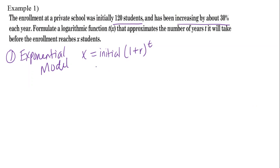And we have all that information. What was our initial? 120. And our rate, if it's 30%, our r equals 0.30. So we have one plus 0.3 to the t. So x equals 120 times 1.3 to the t. So that's our exponential model.